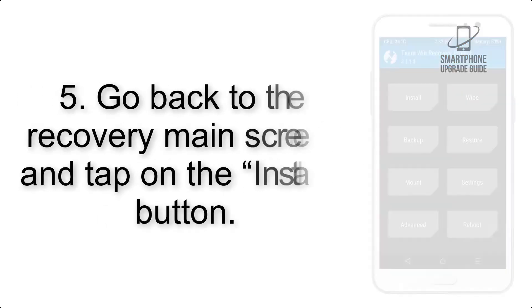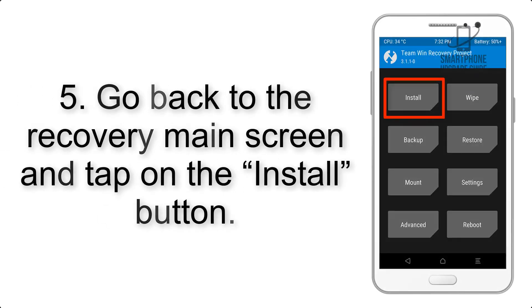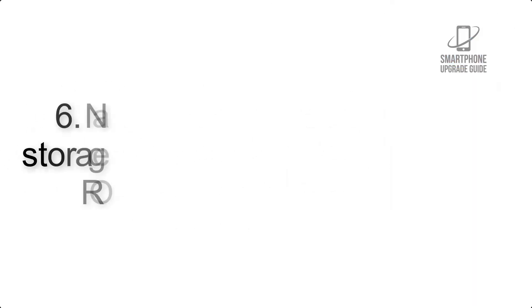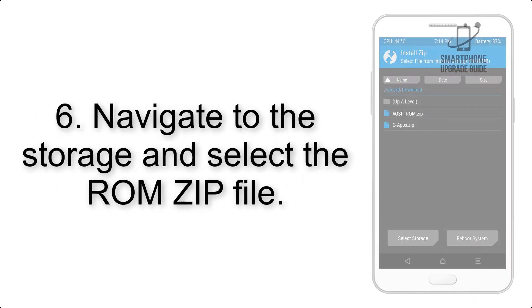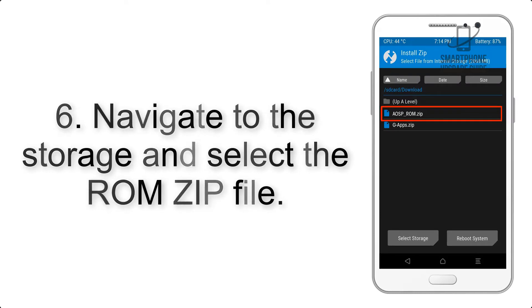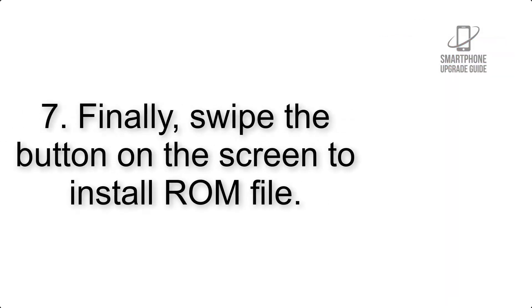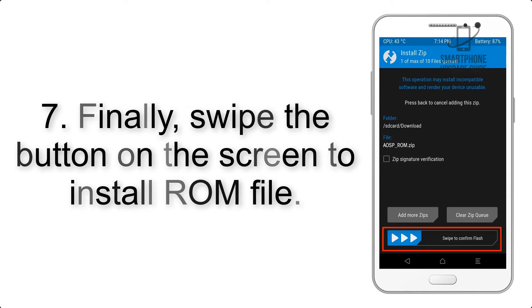Step 4: Swipe the button to wipe the device. Step 5: Go back to the recovery main screen and tap on the Install button. Step 6: Navigate to the storage and select the ROM zip file.